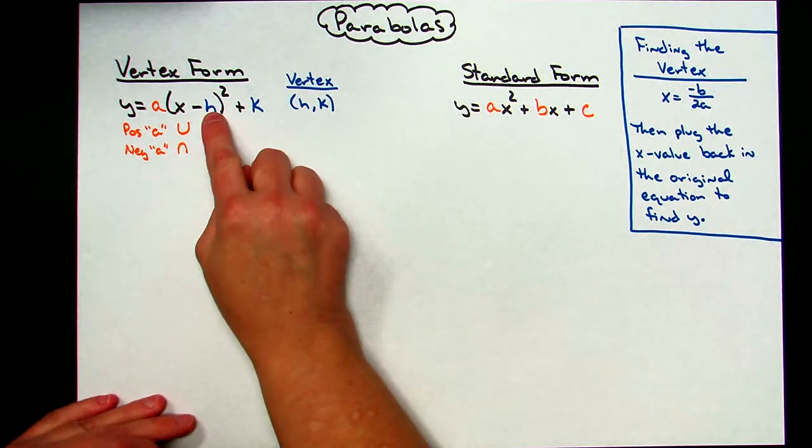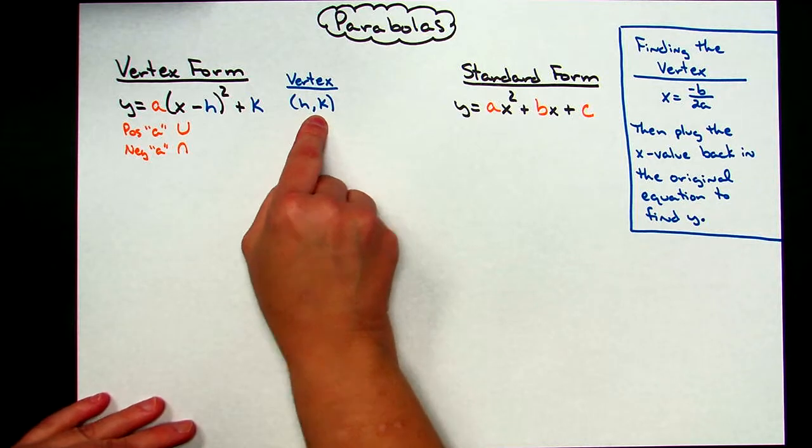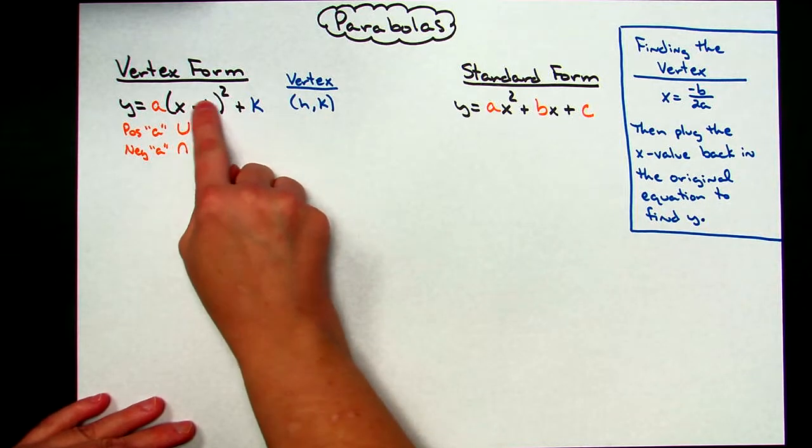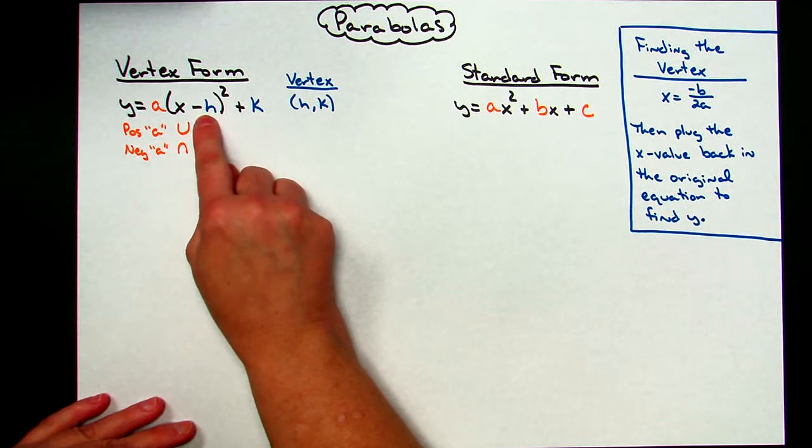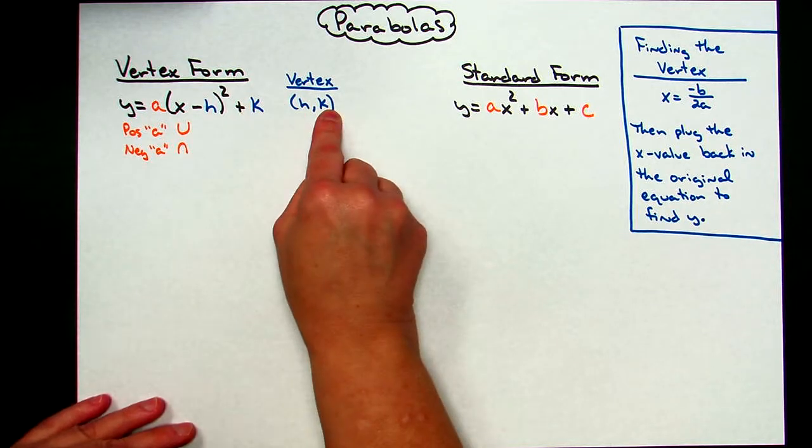These two numbers, I can look at these in vertex form and I can know my vertex is going to be (h, k). Keeping in mind it is showing a negative here, it'll be the opposite number here because I need a positive out, and it will be the same number that is right there for my vertex.